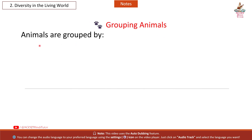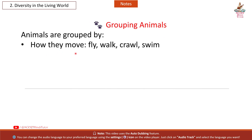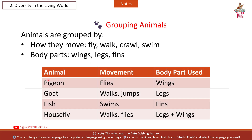Grouping Animals: Animals are grouped by how they move — fly, walk, crawl, swim — and by body parts used: wings, legs, fins. Pigeon: movement — flies; body part used — wings. Goat: movement — walks and jumps; body part used — legs. Fish: movement — swims; body part used — fins. Housefly: movement — walks and flies; body parts used — legs and wings.